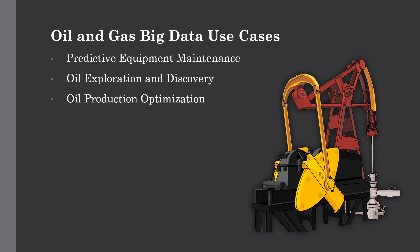These are three main applications in the field of oil and gas. The first one is predictive equipment maintenance. Oil and gas companies often lack visibility into the condition of their equipment, especially in remote offshore and deep water locations. Big data can help by providing insights so companies can predict the remaining optimal life of their systems and components, ensuring their assets operate at good production efficiency.